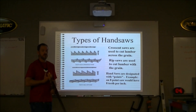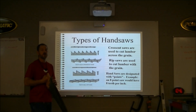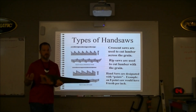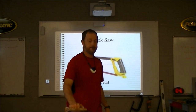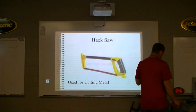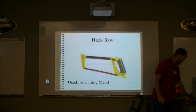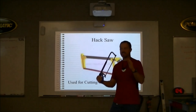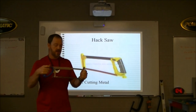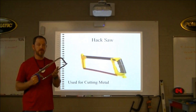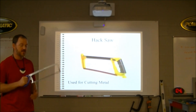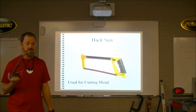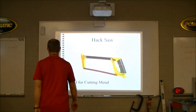Saws are designated with points — that's the number of teeth per inch. An eight-point saw has eight teeth per inch. This is a hacksaw and it's used for cutting metal. A lot of people when they're young try to cut lumber with a hacksaw, but it takes forever to cut just a two-by-four. Make sure you use a hacksaw for metal and not for wood.